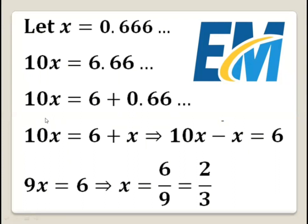Now we can write 10x minus x equals 6. So 9x equals 6, and then x will be 6 over 9, which simplifies to 2 over 3.